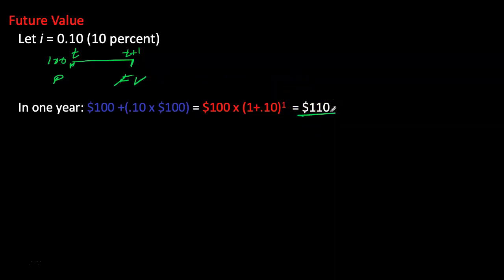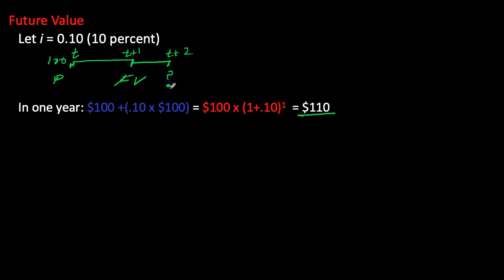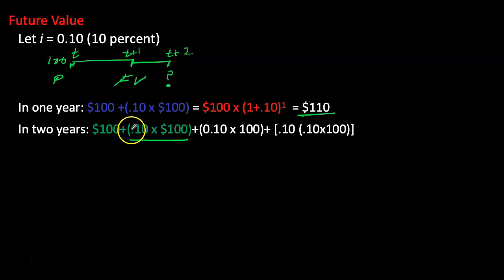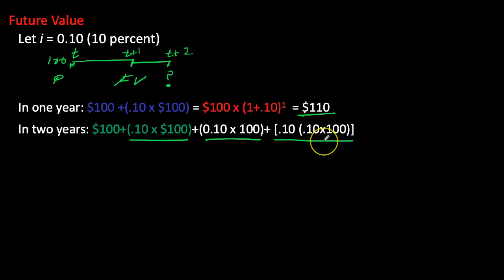If I choose to save for another year, what would be the value of my investment after two years? In the first year I have my $100 principal, and the term in green is the interest earned on my principal — giving $110. In the second year I'm again earning 10% on my principal, and also earning interest on interest.